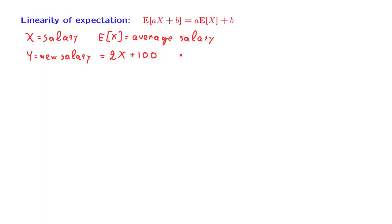What happens to the expected value of the salary, or the average salary? Well, the new average salary, which is the expected value of 2X plus $100, is twice the old average, plus $100. So doubling everyone's salary and giving to everyone an additional $100, what it does to the average is that it doubles the average and adds $100 to it. This is the linearity property of expectation in one particular example.